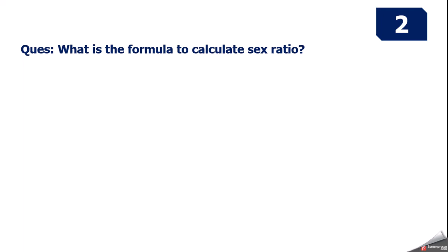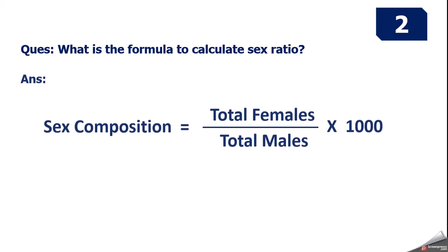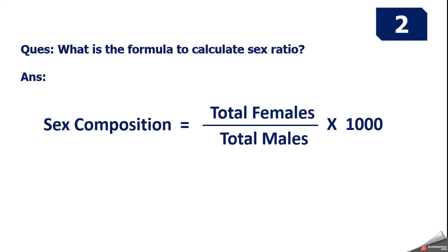Question 2: What is the formula to calculate sex ratio? Answer — Sex Composition / Sex Ratio = (Total Females ÷ Total Males) × 1000.